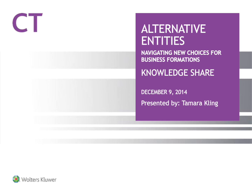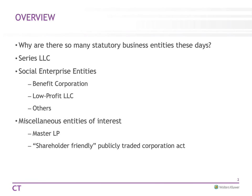So, where do we begin with alternative entities? The overview is we're going to talk about why there are so many statutory business entities today. There's a lot to choose from. Some of them include the Series LLC, and then there is what is called Social Enterprise Entities, mostly the Public Benefit Corporation. Some other items of interest are the Master Limited Partnership and Shareholder Friendly Publicly Traded Corporations.